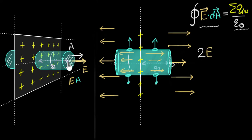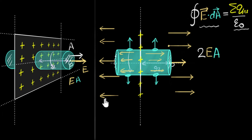The same flux applies to the back surface — the story is exactly the same. Which means the total flux — the left-hand side of Gauss's law — would be two times E times A, where A is the area of the front surface.